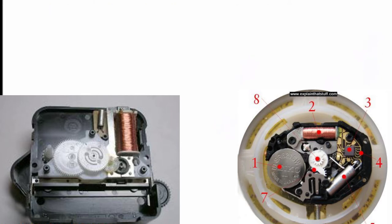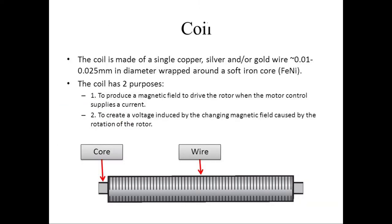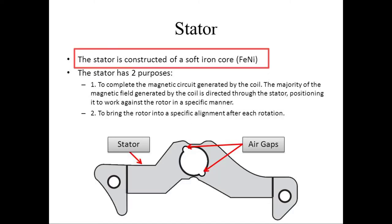The Lavet motor is made up of three components: stator, rotor, and coil. The coil is made of a single copper, silver, or gold wire 0.01 to 0.025 millimeters in diameter wrapped around the soft iron core. The coil has two purposes: one, to produce the magnetic field to drive the rotor when the motor control supplies a current; two, to create a voltage induced by the changing magnetic field caused by the rotation of the rotor.